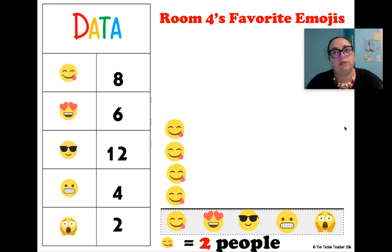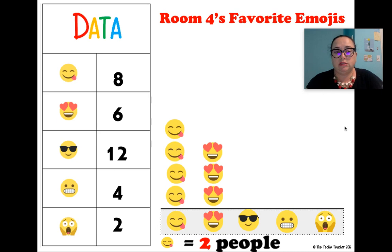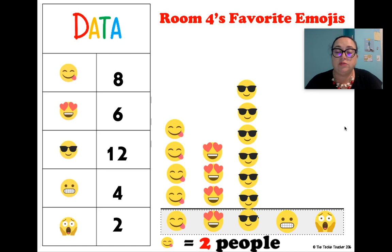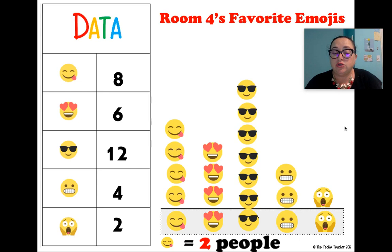Now for the lovey eyes, six children chose that. We need to figure out how many emojis to put on our pictograph — counting by twos: two, four, six — that's three emojis. For the cool guy sunglasses, counting by twos: two, four, six, eight, ten, twelve — that's six emojis, equaling 12 responses. The oh-my-gosh emoji had four kids, so counting by twos that's two emojis. And the final one is just one picture because one picture equals two people.